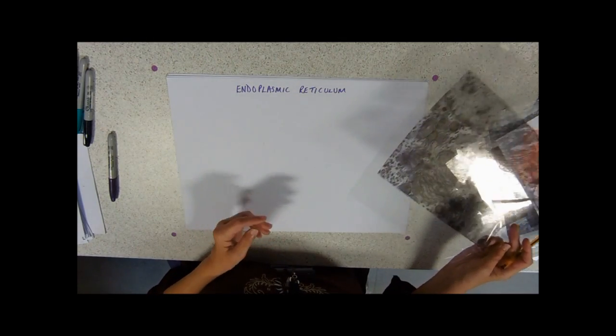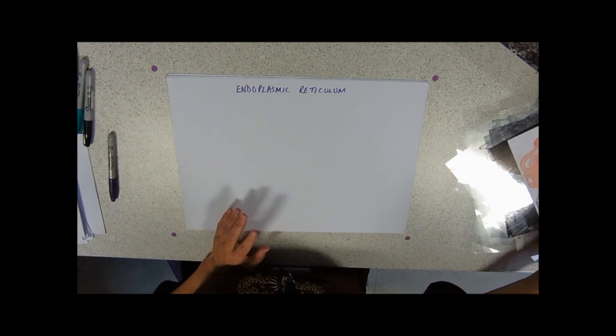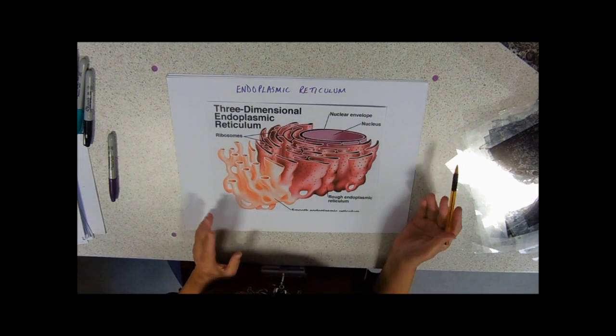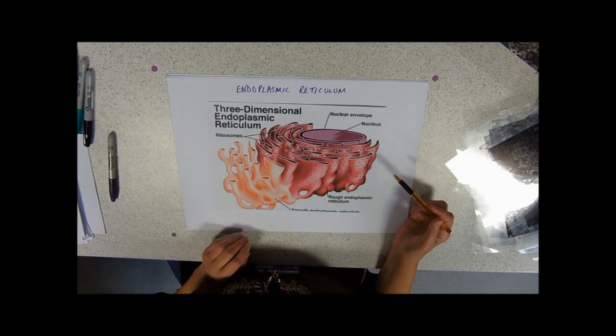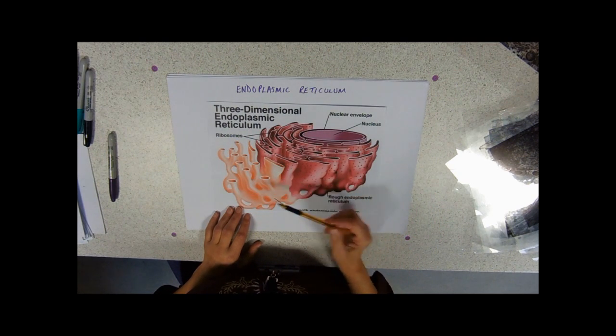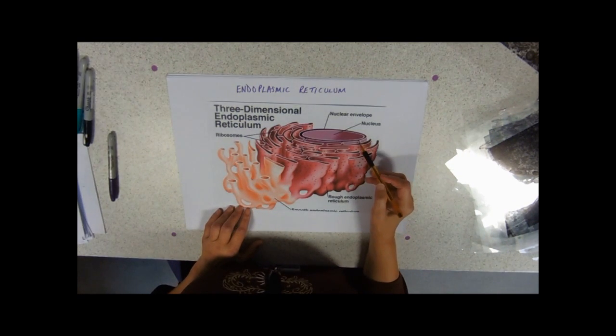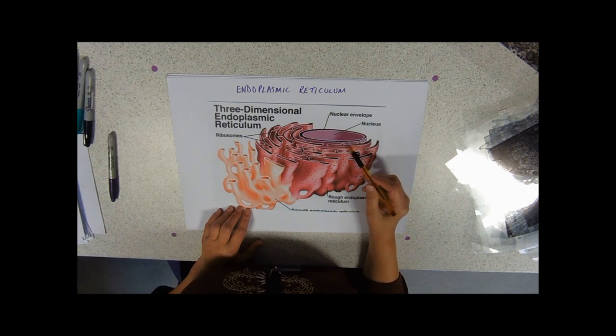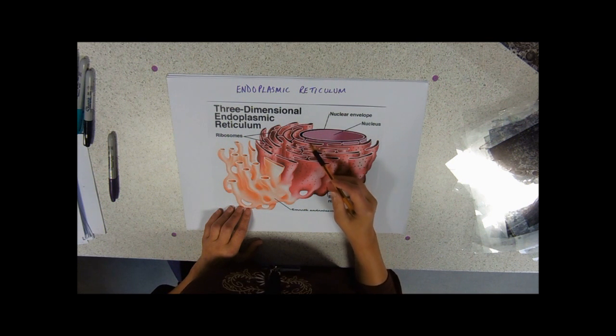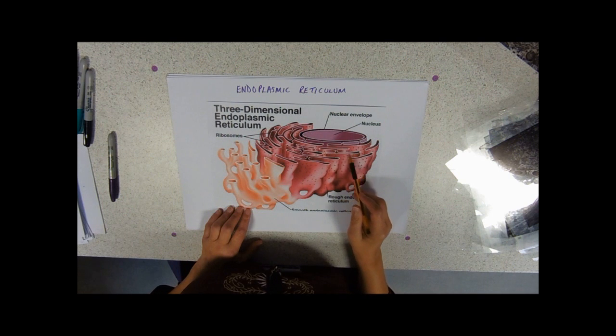Endoplasmic means inside the cytoplasm. Reticulum means a network. If we look at it in three dimensions, then we can see why it's called a single organelle, because in three dimensions, every bit of endoplasmic reticulum is connected to every other bit and it is also connected to the outer membrane of the nucleus.